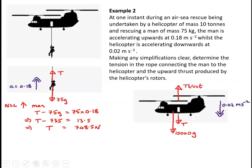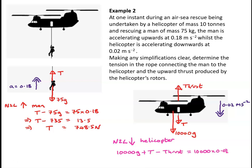If we now consider the helicopter, the forces acting on it are its weight of 10,000g, the tension in the rope pulling it down, and the thrust upwards produced by the rotors. The helicopter is accelerating downwards at 0.02 meters per second squared. Applying Newton's second law downwards: 10,000g plus T minus the thrust equals 10,000 times 0.02. So the thrust equals 10,000g plus 748.5 minus 200, which gives a thrust of 98,548.5 newtons.